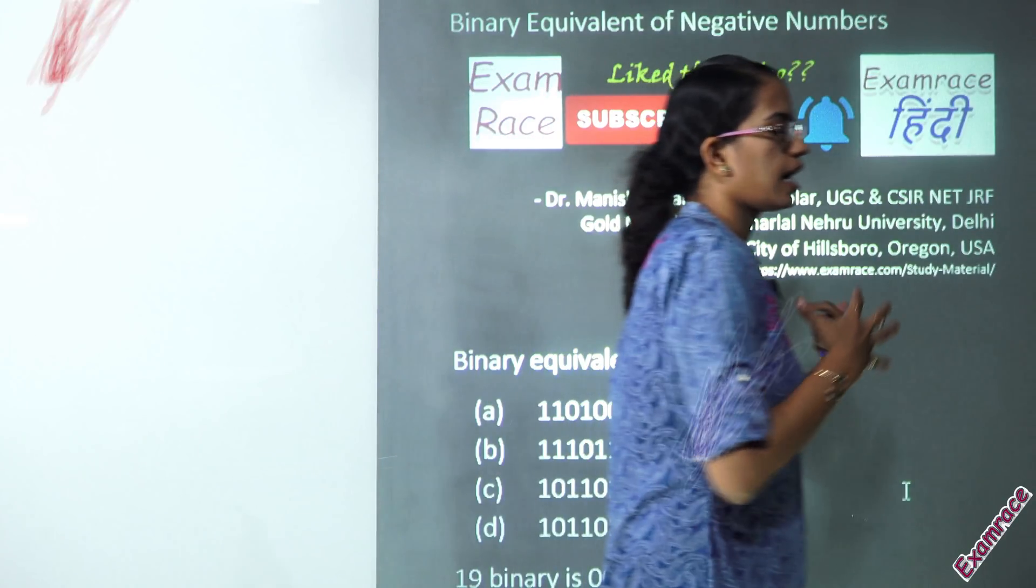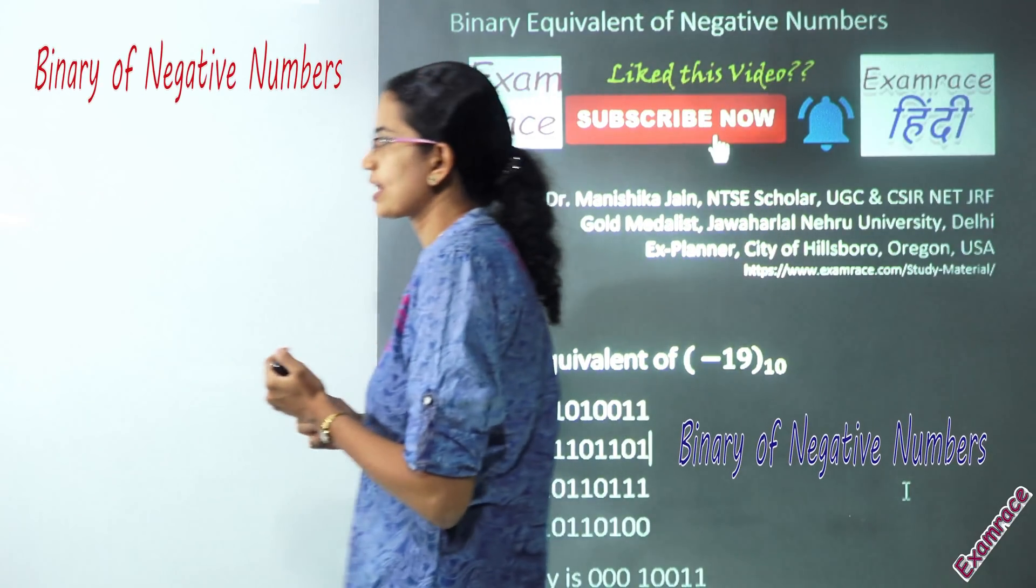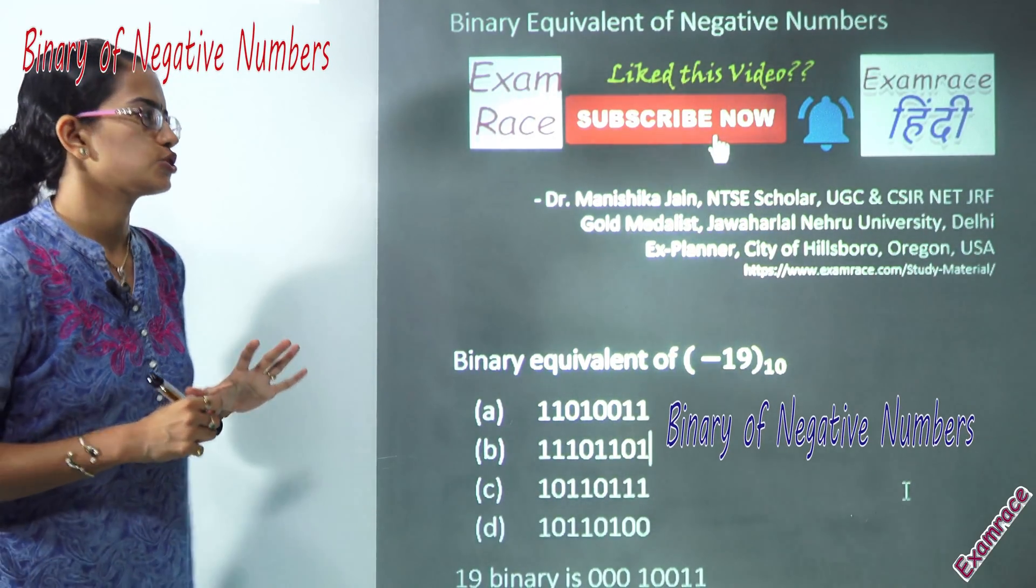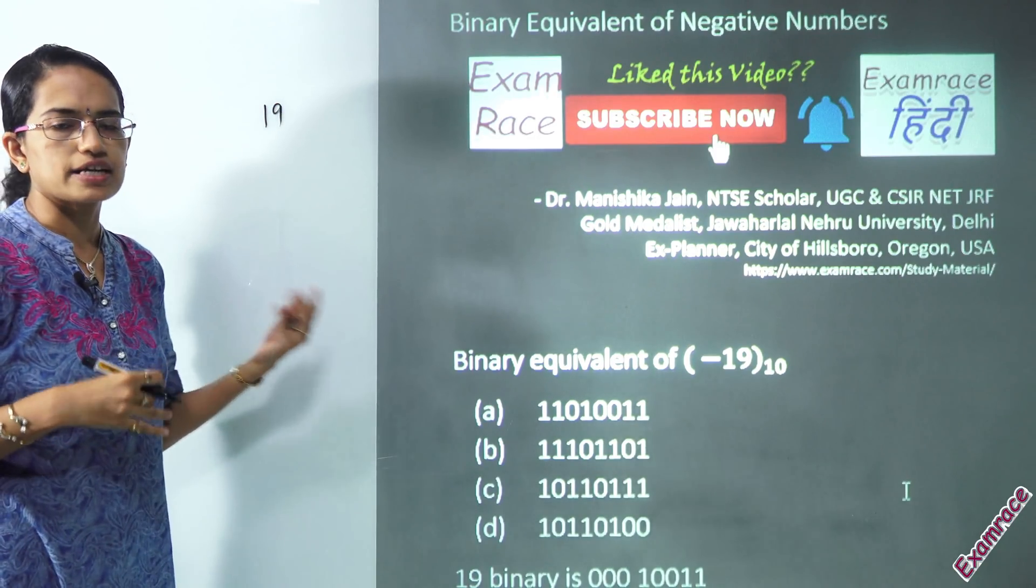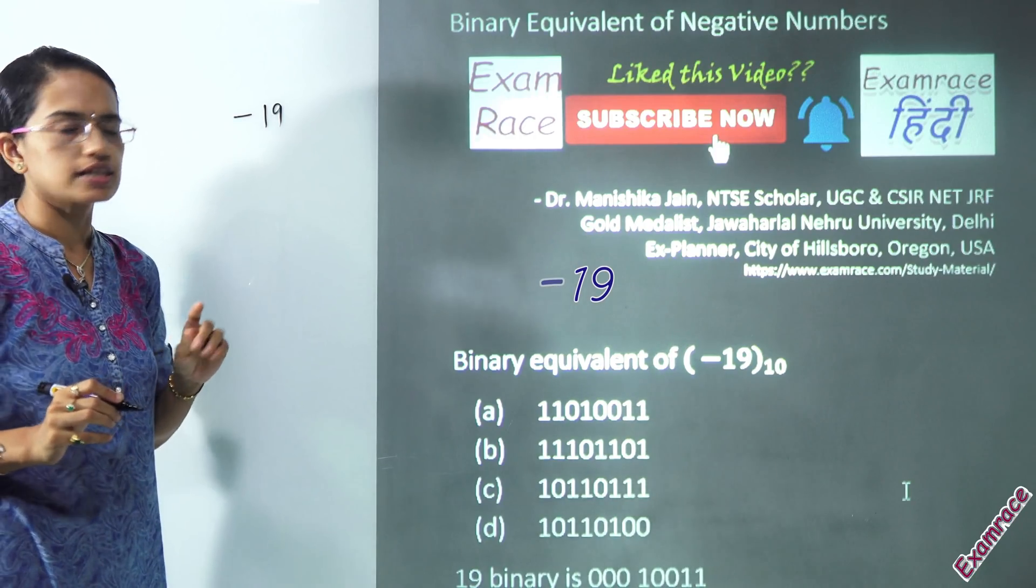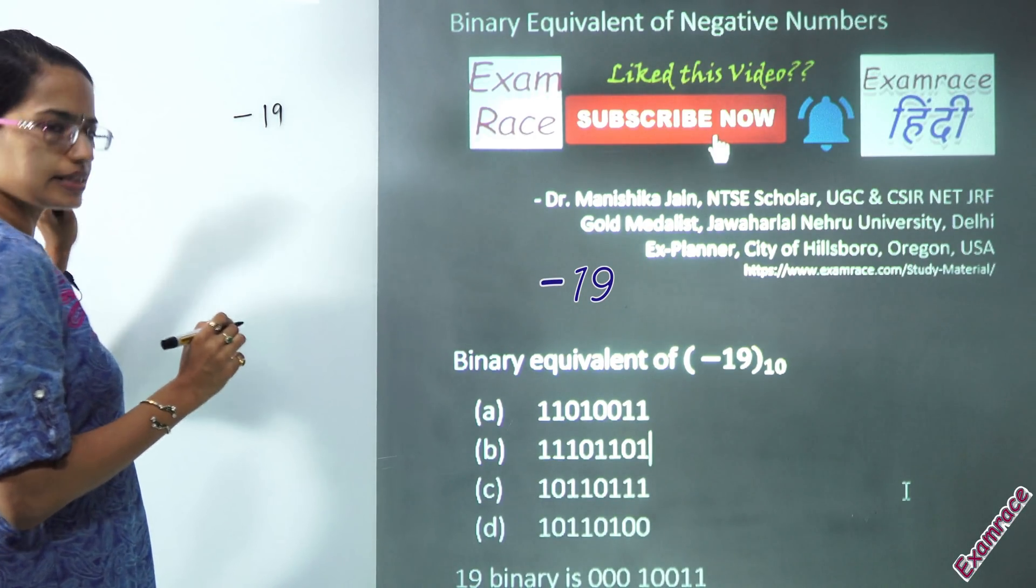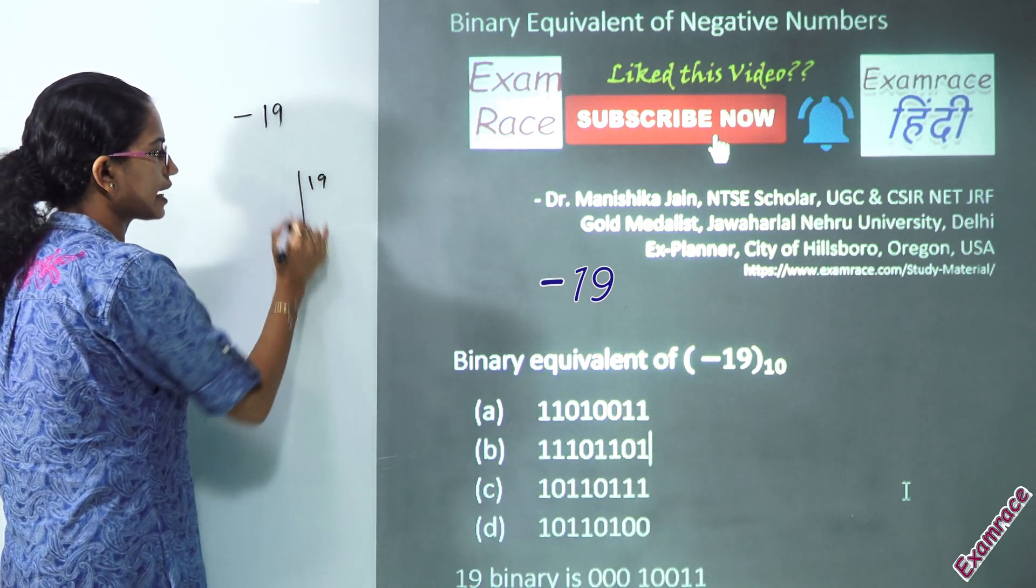Welcome! Today we would understand the binary equivalent for a negative number. Now, when we are working on negative numbers, first thing is to keep in mind that we'll just do a division by 2 and find the binary for the normal number. So, let's say I have to find it for minus 19. I'll keep this minus sign aside and solve it for 19.